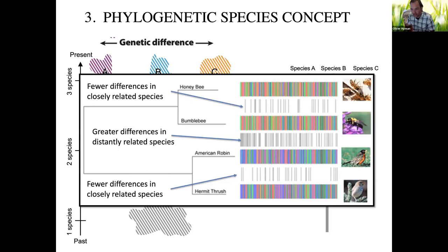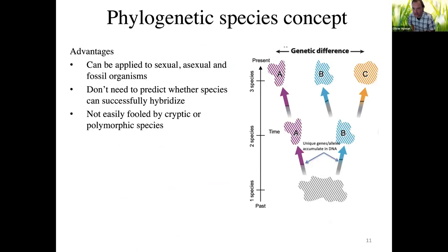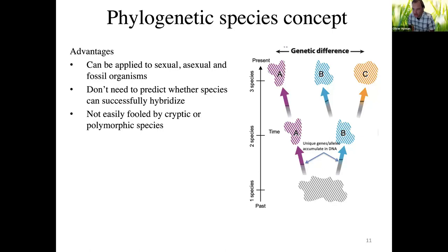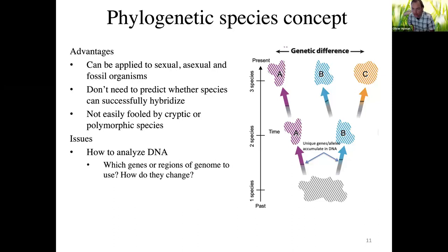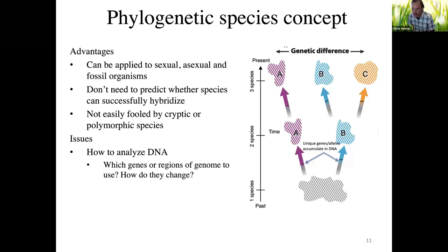The advantages of the phylogenetic species concept are that you can apply it to sexual, asexual, and fossil organisms — basically any organism from which you can get DNA. You don't need to predict whether species can successfully hybridize, and it's not easily fooled by cryptic or polymorphic species. However, it's very difficult to figure out the best ways to analyze the DNA and which genes or regions of the genome to use.